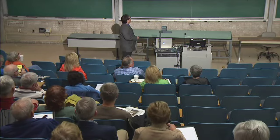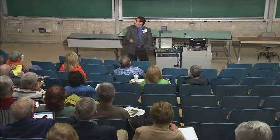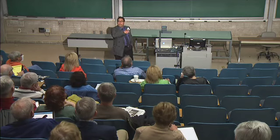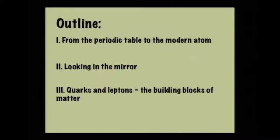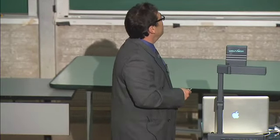So what are we going to do today? We're going to start with the periodic table — and since we're in the chemistry building, I was wondering if there'd be a periodic table on the wall somewhere. We're going to go from there to the modern atom, then we're going to take a little detour and look in the mirror, to see how nature can tell us when we are looking in a mirror. And in the third part, we're going to talk about quarks and leptons, the building blocks of matter.